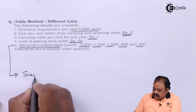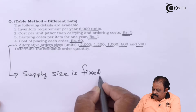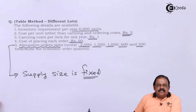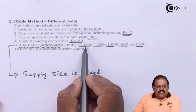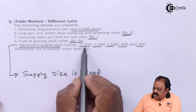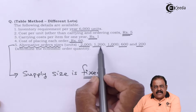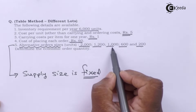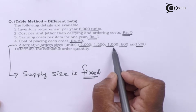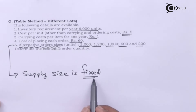Alternative order sizes means the supply size is fixed. That means I can order a quantity of 2,000 but I cannot order 1,900. I can order 1,200 but not 1,300. I can order 1,000 but not 900 units. I can order 600 but not 650. That means the supply size is fixed.